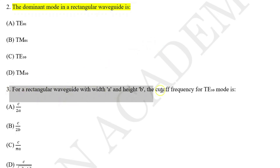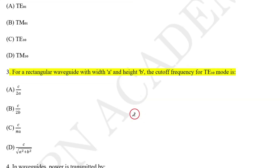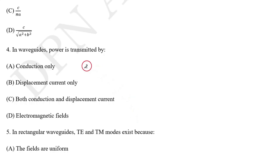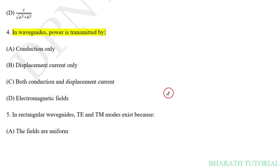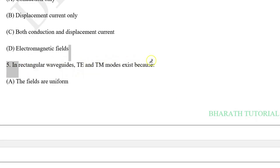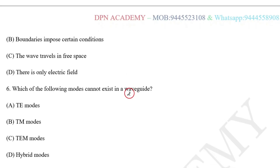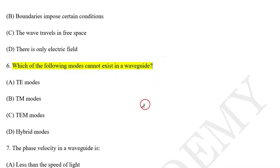Question number three: For a rectangular waveguide with dimensions A and B, the cutoff frequency for TE10 mode is? Question four: In waveguide, power is transmitted by? Question five: In a rectangular waveguide, TE and TM mode exist because? Question six: Which of the following modes cannot exist in a waveguide?